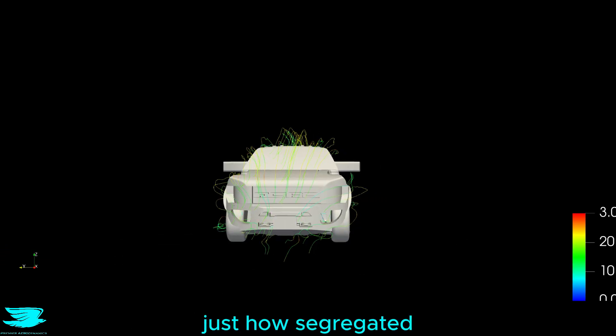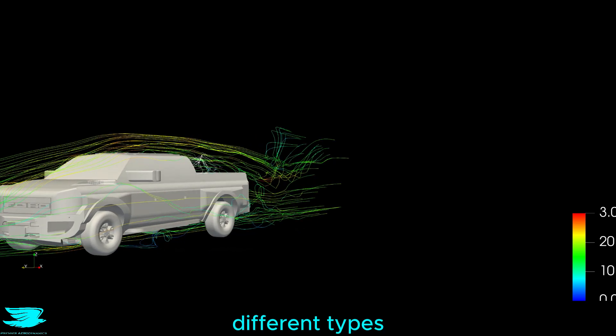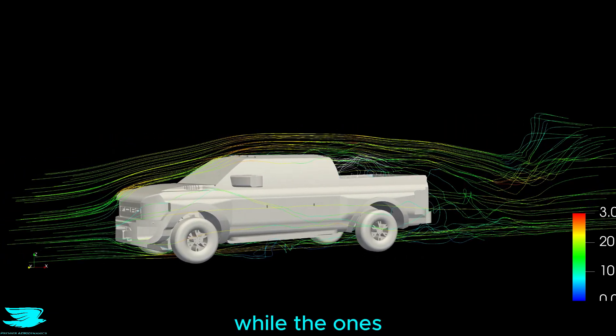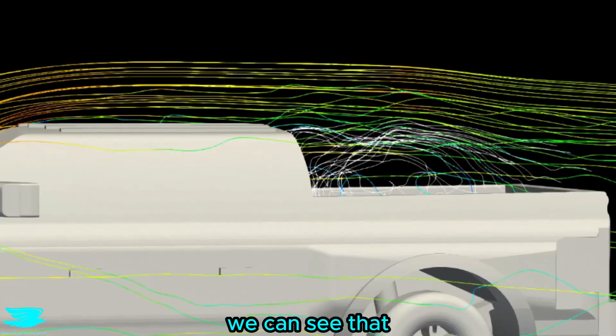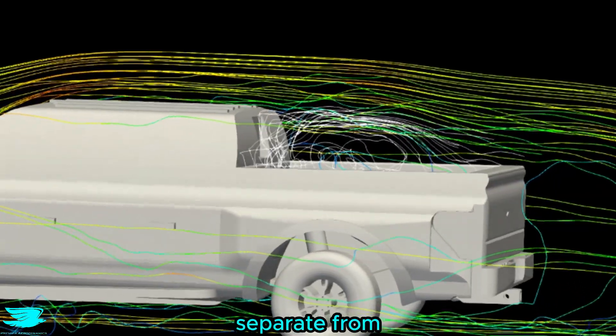I wanted to see just how segregated the flow in the bed was to the rest of the flow, so I put two different types of streamlines. The ones in the bed are white, while the ones outside are not. We can see that the white streamlines in the bed just continually recirculate around and are very separate from the rest of the flow.